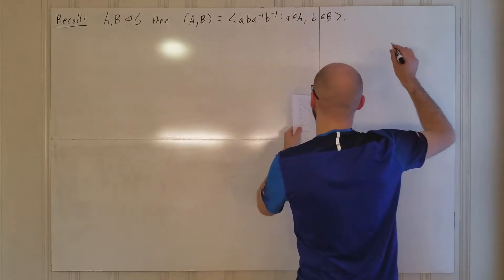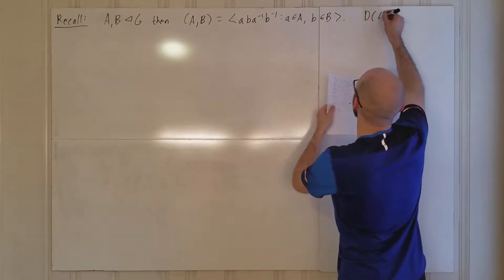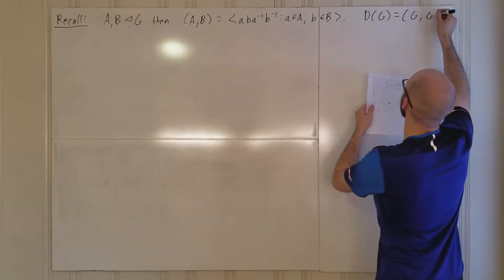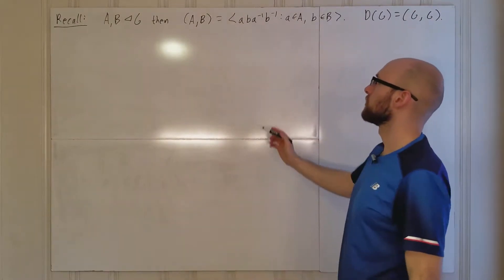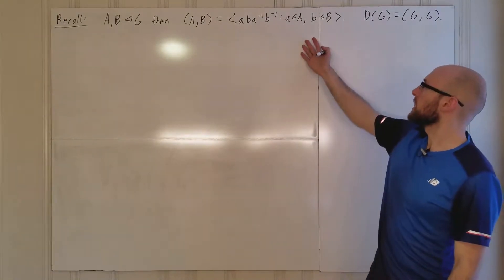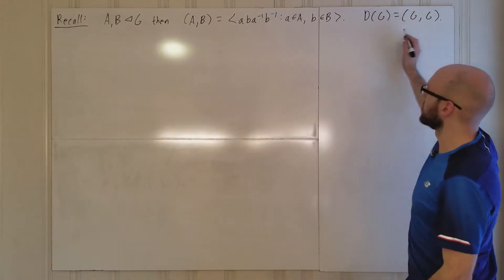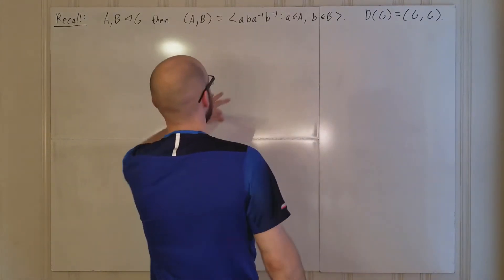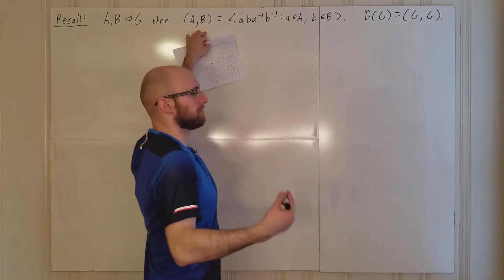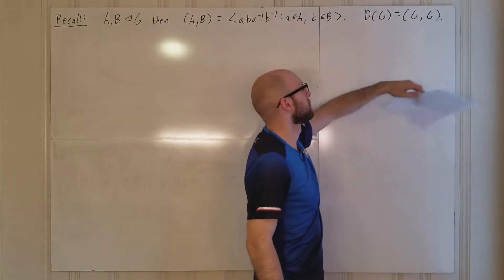The commutator subgroup is DG, which is just [G,G] — things of the form aba⁻¹b⁻¹ where a and b belong to G. We proved last time that this is always a normal subgroup of the group in question, so in particular DG is normal in G.